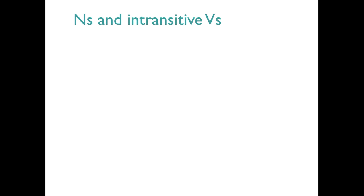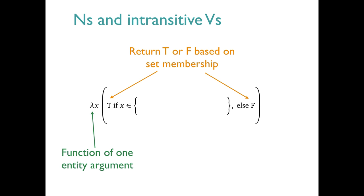Next, we'll do nouns and intransitive verbs. These all denote one-place functions in our system. This expression here is a kind of general framework for defining N and intransitive V meanings. The outer lambda x means that we're talking about a function that takes one entity argument. When that argument comes in, the return value is either a T or an F, true or false, depending on whether the argument is in whatever set we specify here.